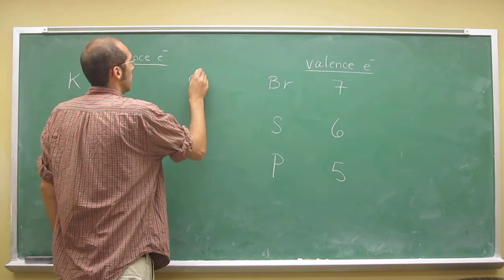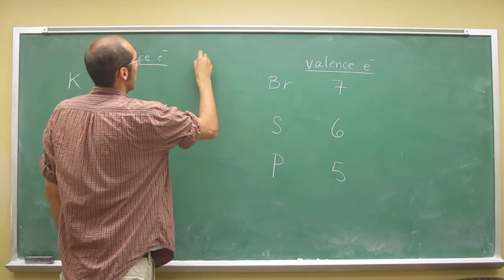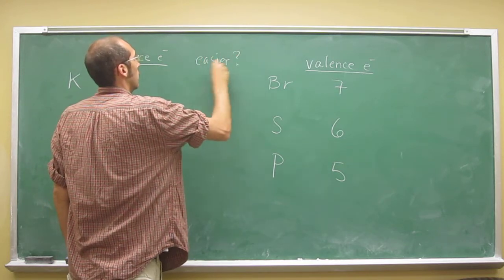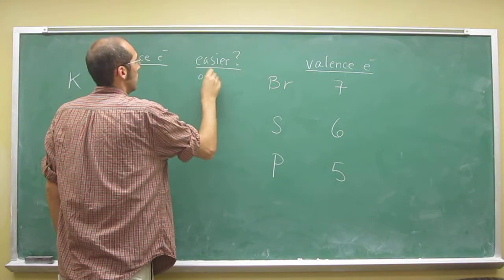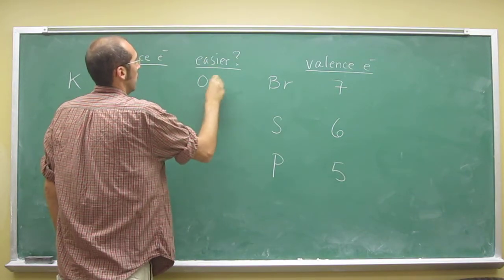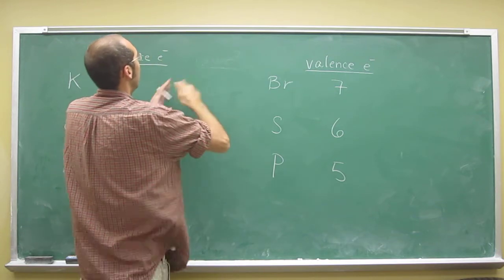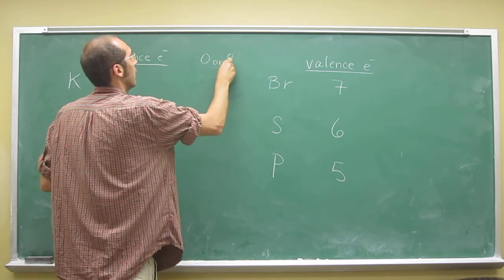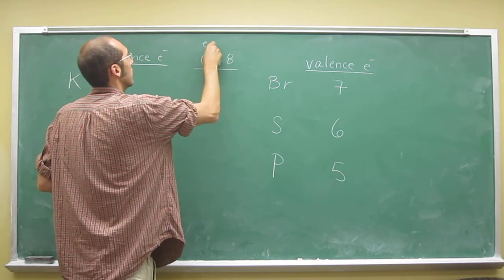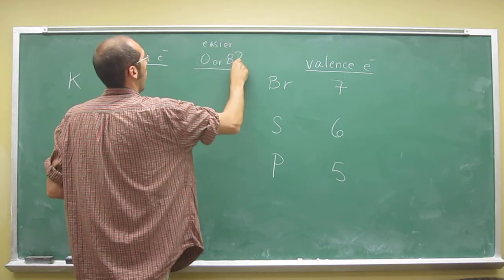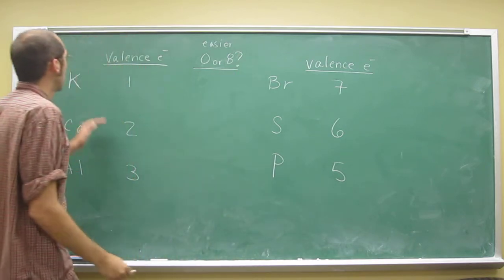So zero, we'll say, we'll do it this way. Which is easier? Zero, or, sorry. Let's do it this way. Zero or eight.